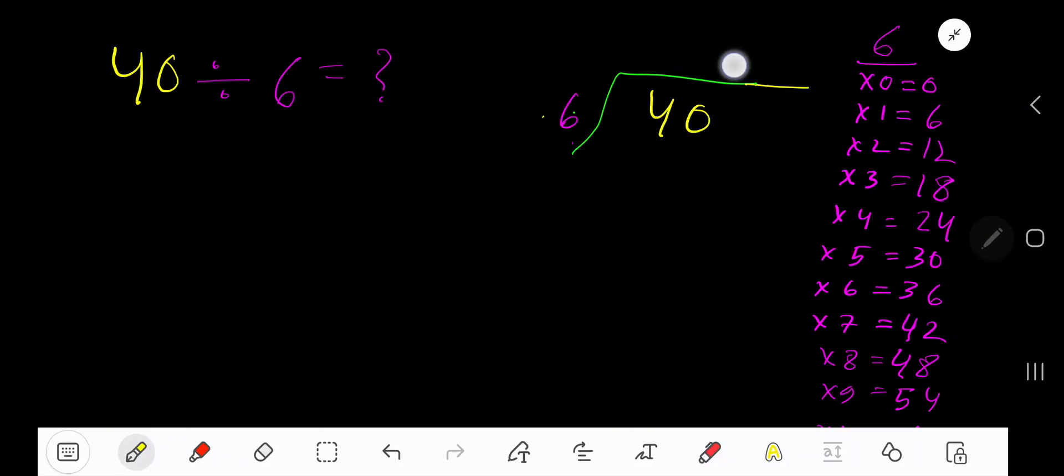40 divided by 6. Here 6 is a divisor, so we need the multiplication table of 6. 6 times 0 is 0, 6 times 1 is 6, 6 times 2 is 12, 6 times 3 is 18, 6 times 4 is 24.